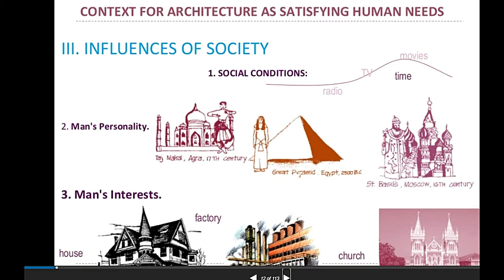Society also has an influence on architecture. For example, social condition — if you are in a squatter area, most probably your design will also reflect that. But if you are in a high-end subdivision like Forbes Park or Ayala Alabang, the social condition is high, so the buildings there are probably beautiful, modern, and expensive in design.